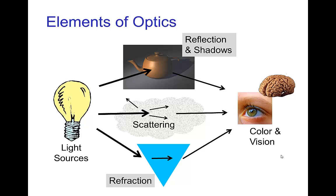Then finally, the image is formed in the eye and processed in the brain, and there's many interesting elements of optics involved there, especially the perception of color.